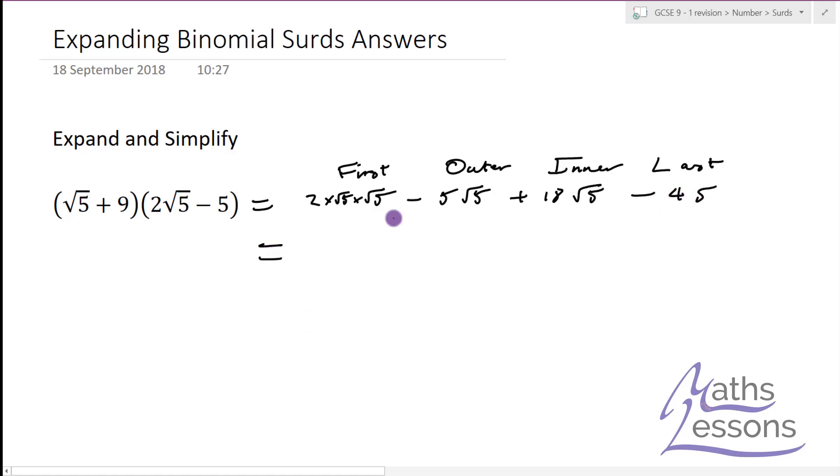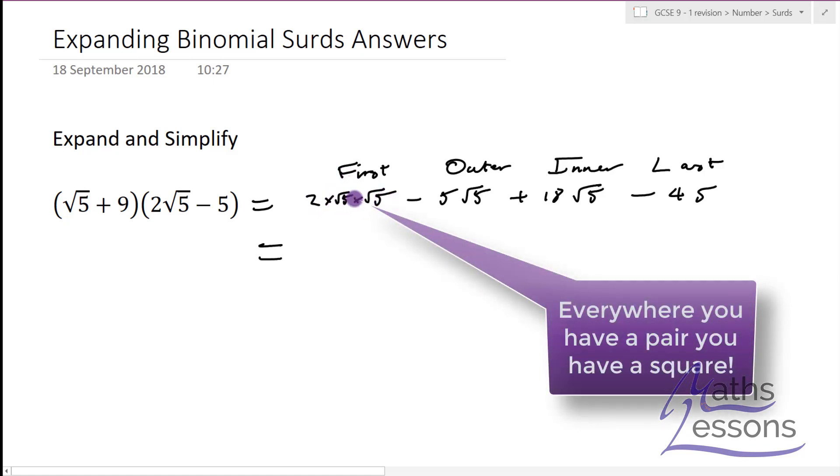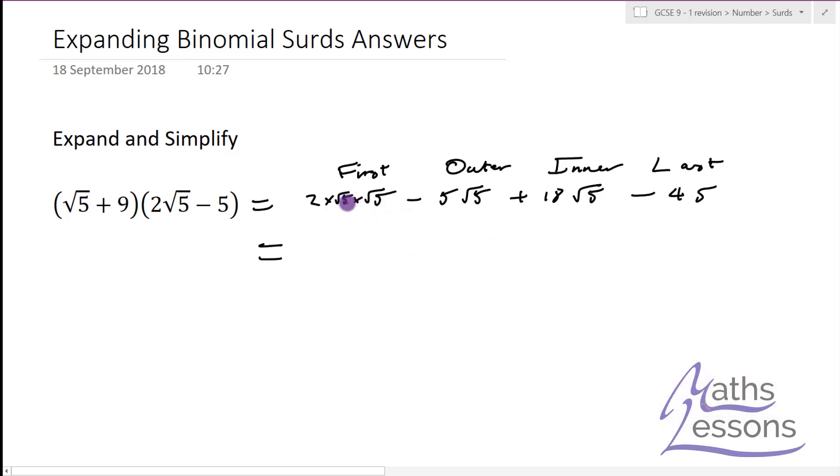Now we simplify all this. Well, √5 times √5 - everywhere we have a pair we have a square, so that means we just get 5 there times 2 is 10, because √5 squared is just 5. And we've got minus 5 lots and 18 lots of √5, so it's going to be plus 13 lots of √5 if we take 5 lots off the 18.